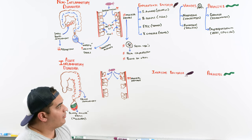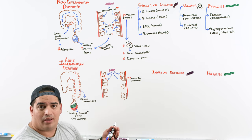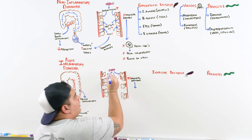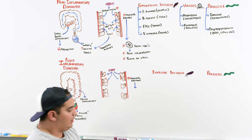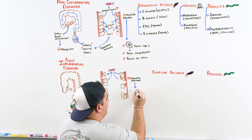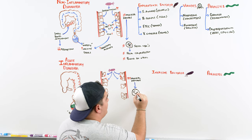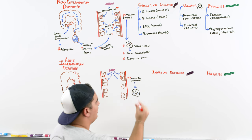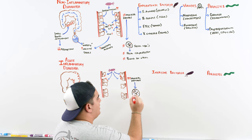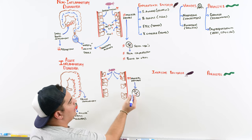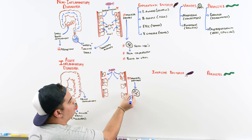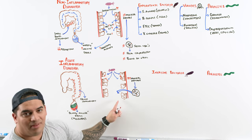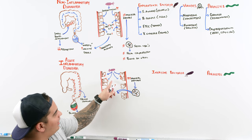When you damage the mucosa, it triggers an inflammatory reaction. White blood cells arrive to fight off whatever's causing this and move through the bloodstream into the intestinal lumen. These fecal white blood cells — essentially neutrophils — try to help, but end up propagating more inflammation.